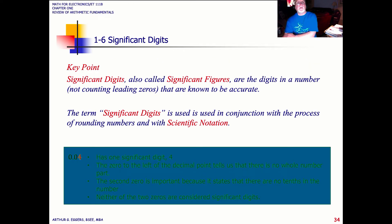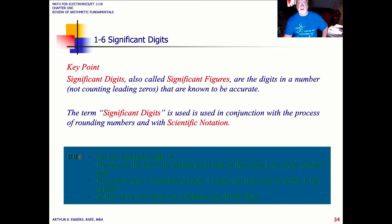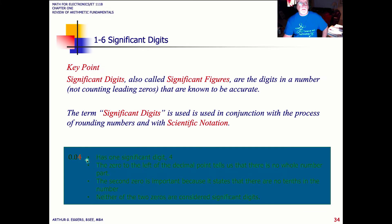The last section here that we'll talk about is significant digits. Key points, significant digits or significant figures, you can use them interchangeably, are the digits in a number, not counting leading zeros, that are known to be accurate. So the term significant digits is used in conjunction with the process of rounding with significant notation. So here we can see the example 0.04. Four is the one significant digit in this representation. The zero to the left of the decimal point tells us there's no whole number part. The second zero is important because it states there are no tenths. So neither of the zeros are considered significant digits.